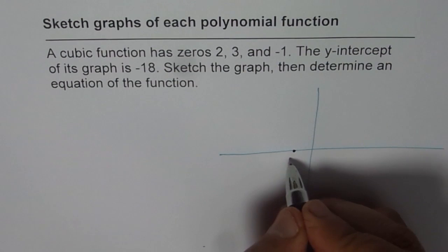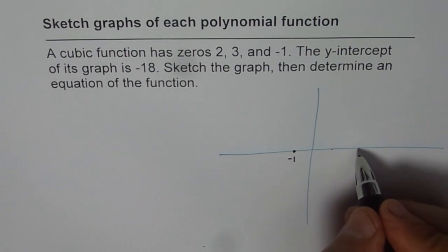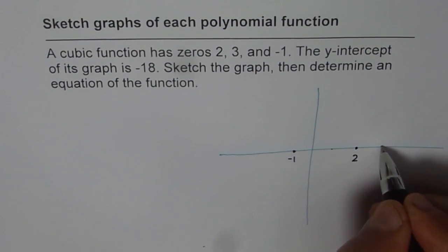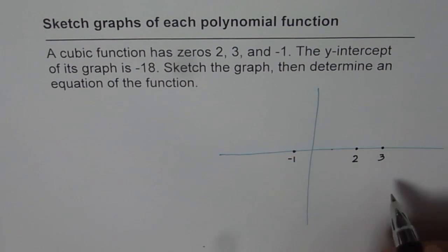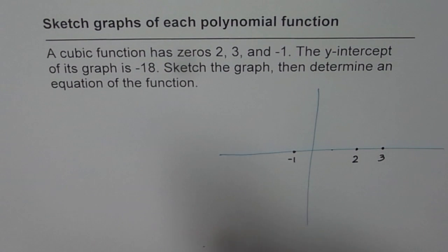So, let us say this is my minus 1 unit. And so, this is 1. So, that becomes 2 for me. And then we have 3 here. So, these are the zeros.